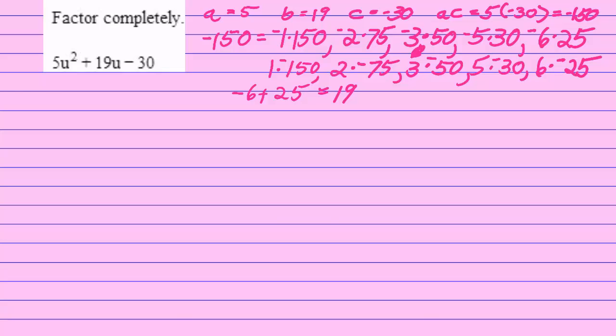Now we're going to do this problem in two slightly different ways. Watch and see. My first choice, my first way of working this problem is going to be 5u squared minus 6u plus 25u minus 30. And then I'm going to group the first two terms and group the second two terms, being careful to leave my plus sign in the middle.